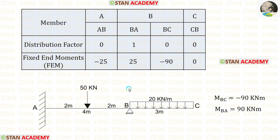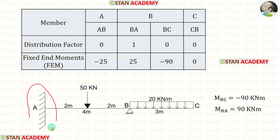Now let us start making the moment distribution table. First, let us enter all the members, then enter the distribution factor values. At point A, there is a fixed support, so the distribution factor will be 0. For member AB, it is 0.